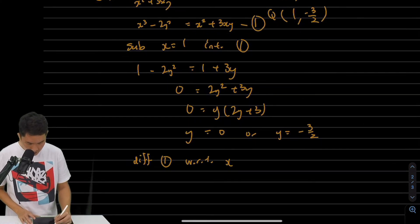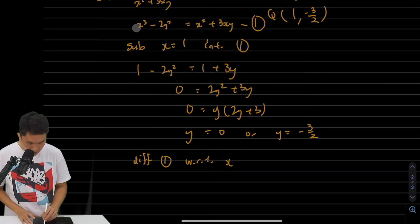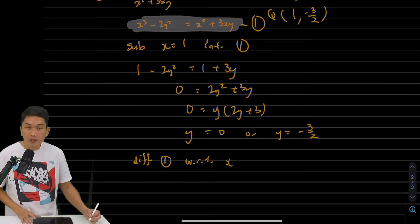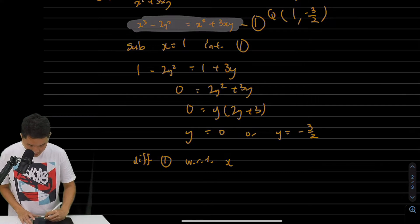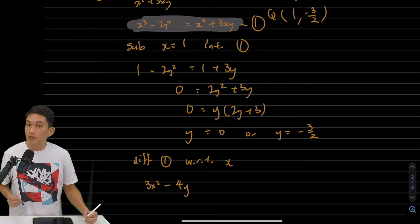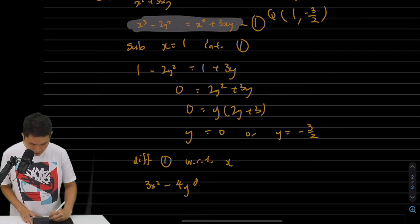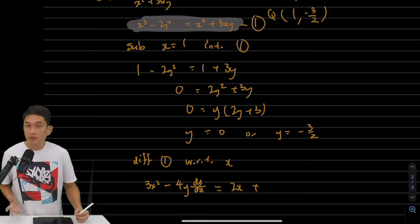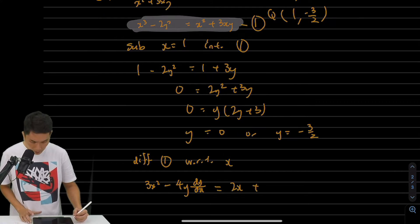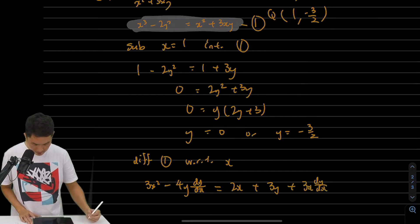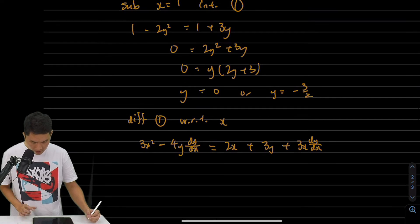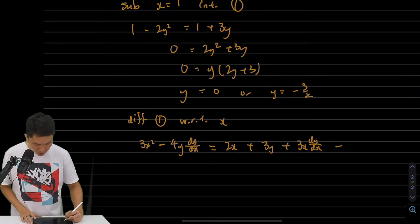That's going to give me... Let me highlight what we're differentiating. We're differentiating the equation in white. So we get 3x² - 4y(dy/dx) - don't forget the chain rule when differentiating y. Then 2x plus, using the product rule, 3y + 3x(dy/dx).